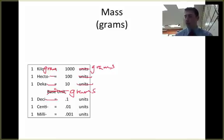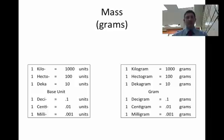One decigram is equal to one-tenth of a gram, or 0.1 grams. One centigram is equal to 0.01 grams, and one milligram is equal to 0.001 grams, or one-thousandth of a gram. Here's the chart again for grams.